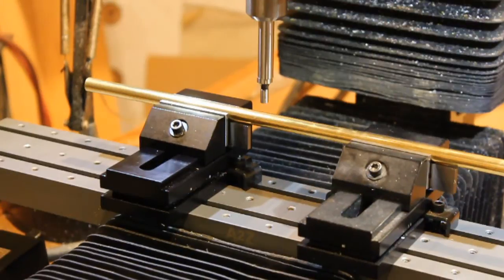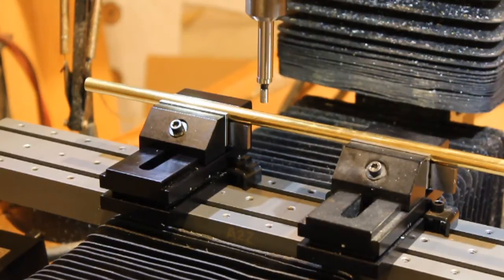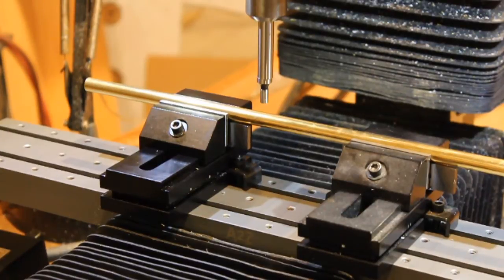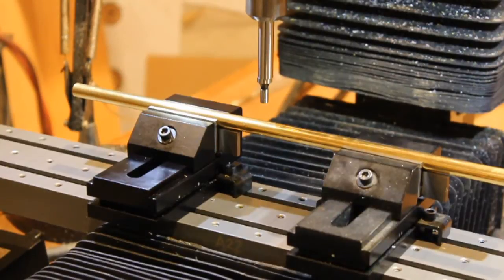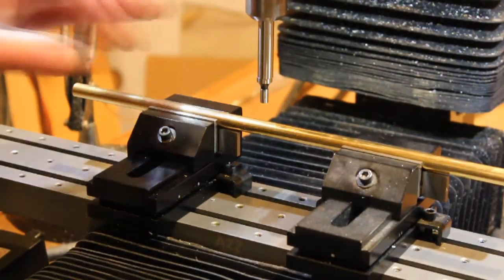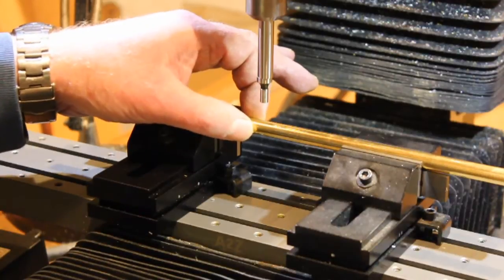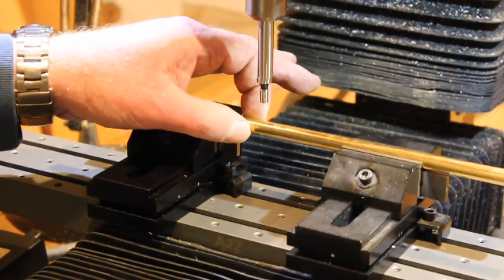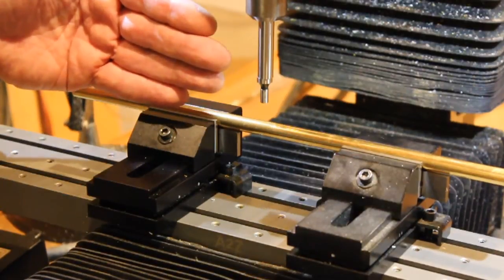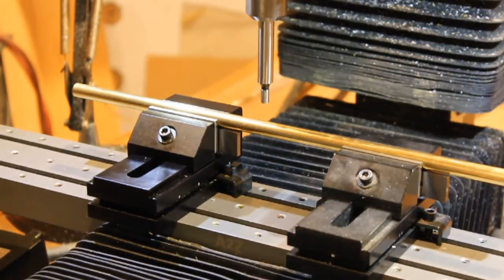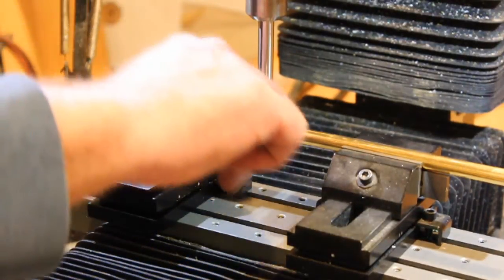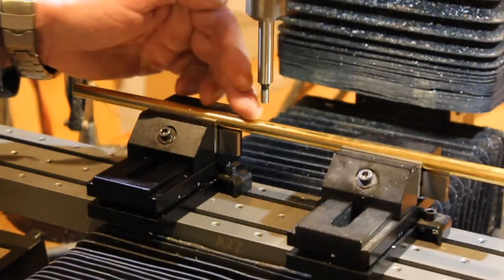So I'm just going to use an MDI command. I'm going to jog to one half the diameter of this rod. So the rod is 0.375 in diameter. I just jogged to Y 0.1875. So now we are directly along, the spindle is directly along the center line.